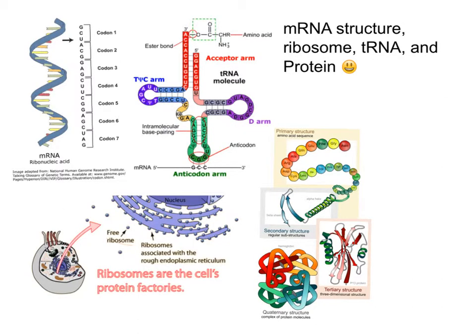In the mRNA structure, it is showing all of the codons and the hydrogen bonds. In the ribosome picture, it is showing all of the ribosomes and how they are shaped in the nucleus. In the tRNA picture, it is showing the anticodon arm and all of the molecules in the tRNA.